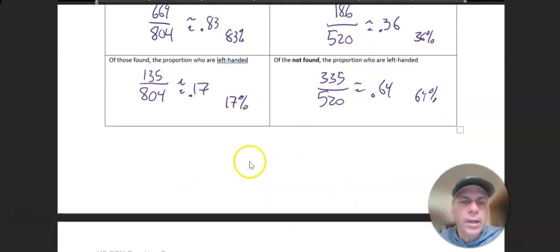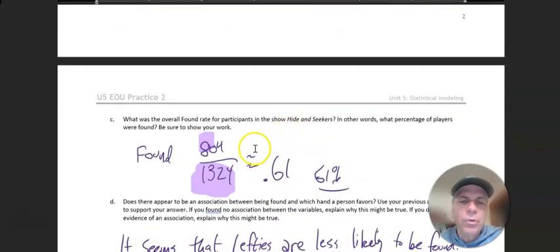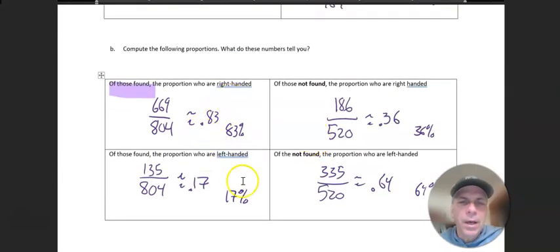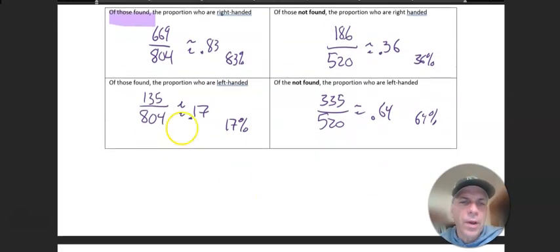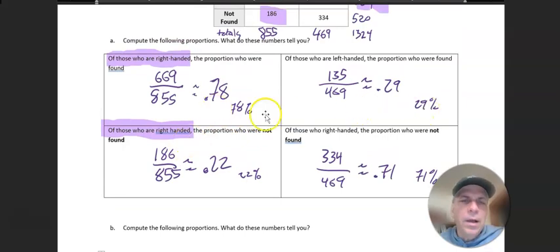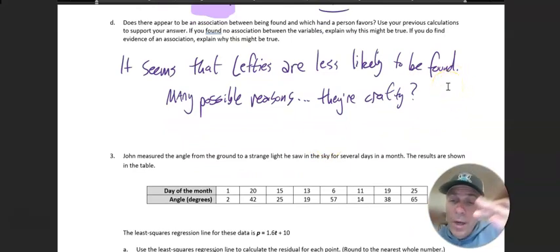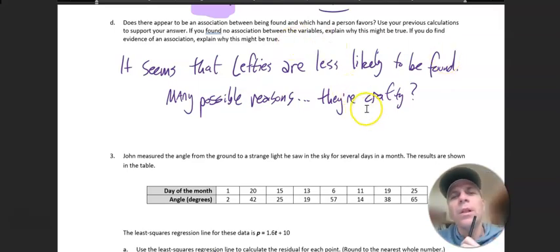But notice, like, with the left-handers—these left-handers, only 17% of them were found of the people who were found. So that seems like lefties are less likely to be found for whatever reason. So you would need to come up with some theory as to why. We don't have any causation—it just looks correlational, so we don't know. But give a theory: maybe they're just crafty, maybe they're just really clever.